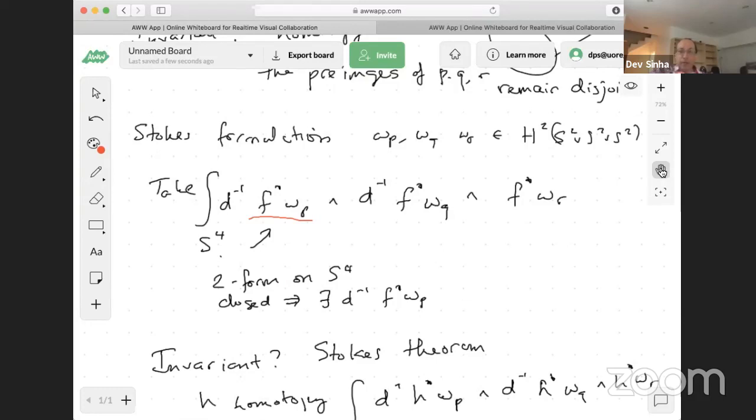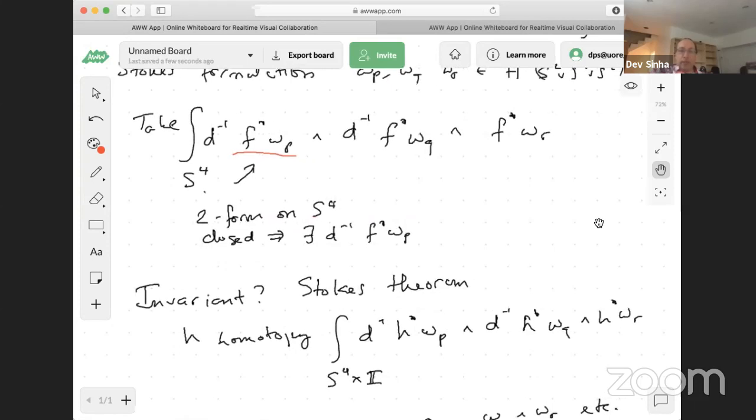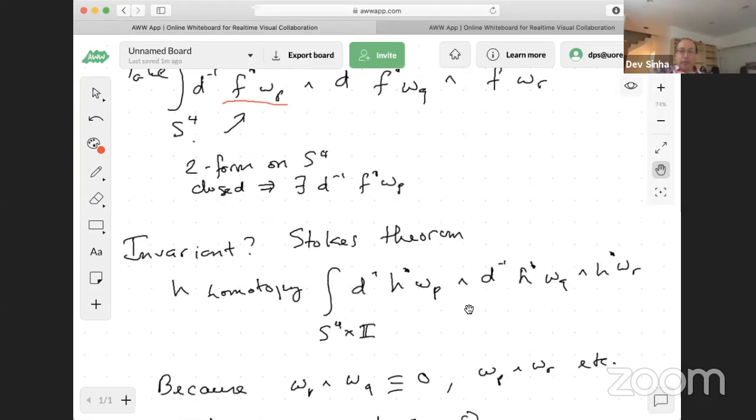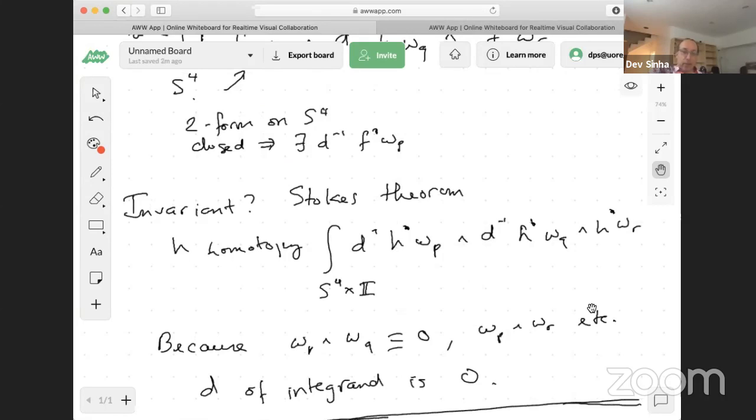It's invariant by a Stokes theorem argument. So if I've got a homotopy, that's a map on S4 cross I, then if I form the same integrand, but with the homotopy pulling back the forms, I can apply Stokes theorem. Then, you notice if I apply d to this expression, I'll get things like h upper star omega p wedge d inverse h upper star omega q wedge h upper star omega r. But omega p and omega r wedge to zero. Therefore, h upper star omega p wedge h upper star omega r is zero. So because these forms are pairwise disjoint in their supports. So their wedges are pairwise zero. d of the integrand is zero and Stokes theorem will tell you that the values on the two ends, which would be the Hopf invariants of f and g, if h was a homotopy between f and g, those numbers are the same.